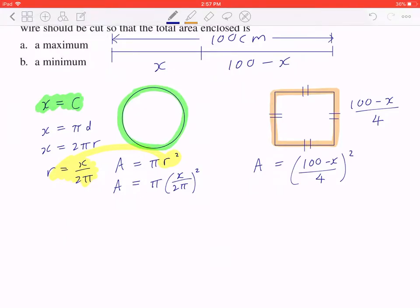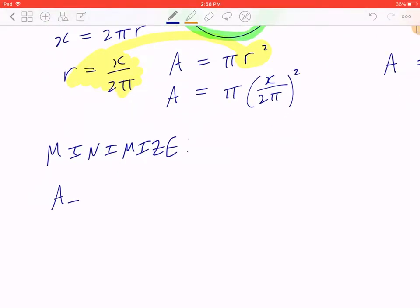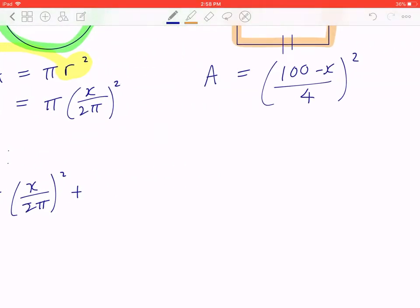Now again, are we minimizing? Are we maximizing? How do we know? So let's start with minimizing. And really, we're going to find both answers in a moment. If you want to minimize the total area, total equals the area of a circle,